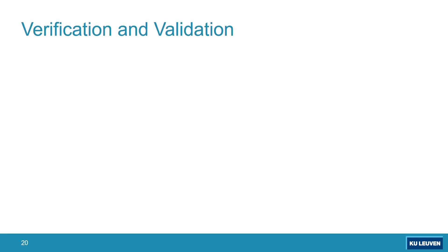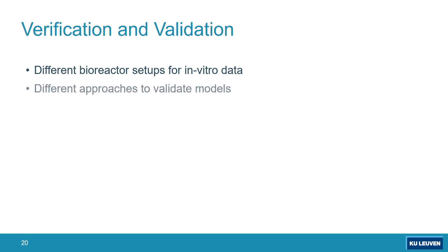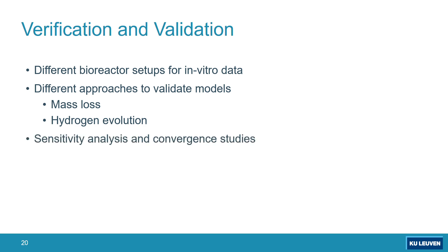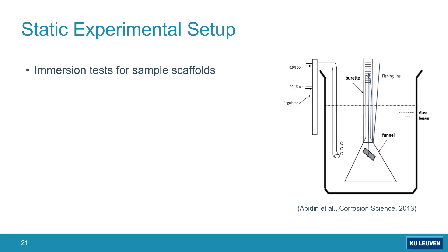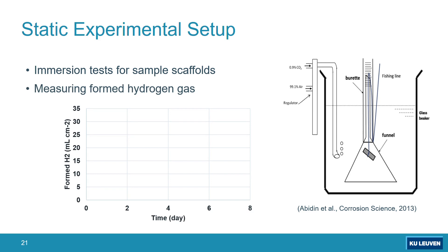In order to verify and validate the model, we need different bioreactor setups for in vitro data, because we should accurately capture the physics of the bioreactor in the model. There are different approaches to validate the models: we can directly measure the mass loss and compare it with the predicted value, or we can measure side products such as hydrogen gas formed during degradation. We also conducted sensitivity analysis and convergence studies, which are crucial for in-house codes. In the first stage of the research, we are working with a static experimental setup using immersion tests, where a sample is floated inside a medium and side products such as hydrogen gas are measured, and based on the stoichiometry of degradation we can calculate the mass loss.